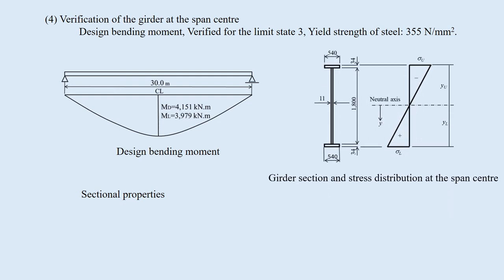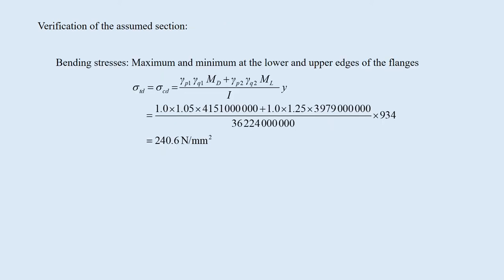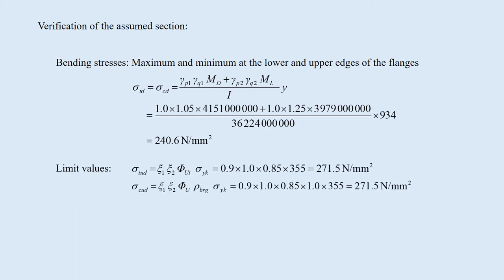This is the assumed girder section. The yield strength of steel is assumed to be 355 N per square millimeter. We need sectional properties, which are calculated accordingly. Then we can calculate bending stresses — the maximum and minimum at the lower and upper edges of the flanges. The limit values are obtained by the design formula. The design stress is within the limit value and satisfies limit state 3.